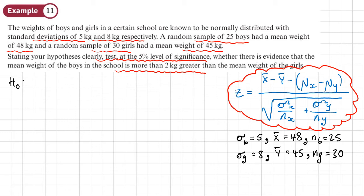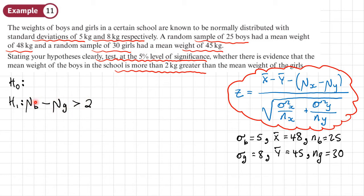We need to think carefully about H0 and H1. It may be easier to start with H1: the mean weight of the boys is more than 2 kg greater than the girls, i.e., mean of boys minus mean of girls is greater than 2. Then H0 is straightforward — just replace that inequality with an equal sign: mean of boys minus mean of girls equals 2.